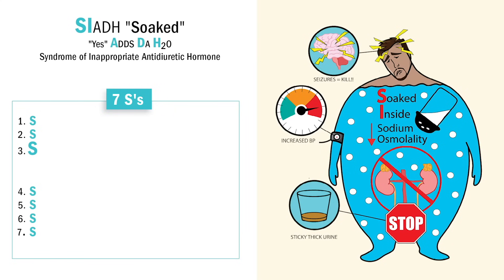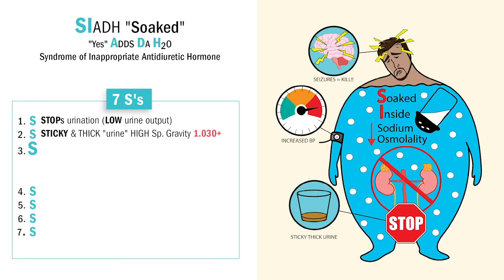Our first S is for stop urinating — we get low urine output. And this means sticky, stinky, and thick urine. This means the keyword: high urine specific gravity over 1.030. We've stopped urinating, so whatever does come out is thick like paste.